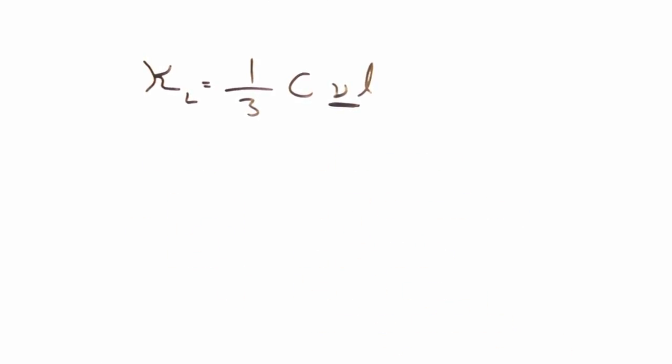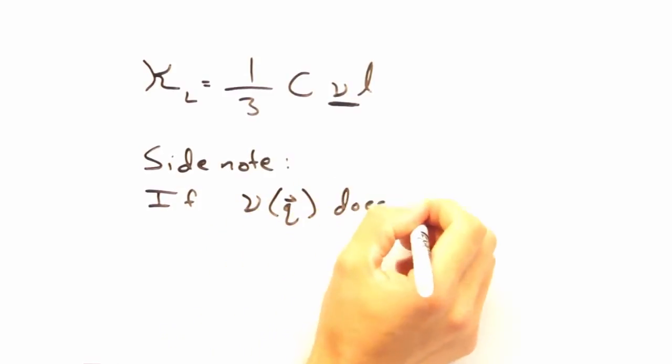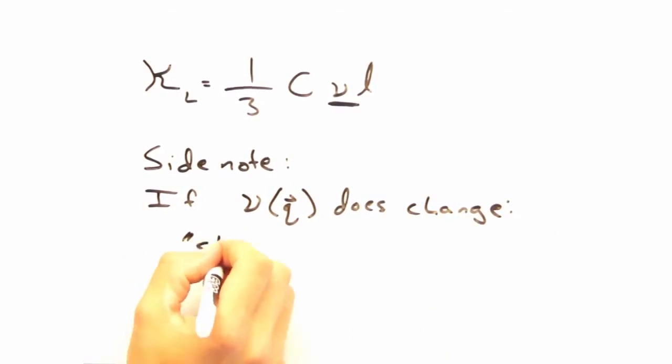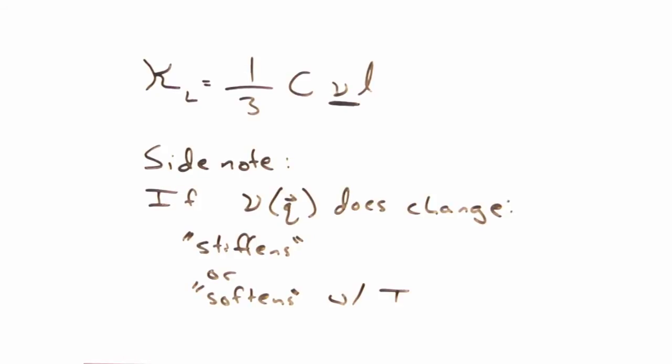Yeah, this is a really good assumption. When the group velocity does change significantly with temperature, it's actually so unusual that we have special terms. We say that the lattice is either stiffening or softening with temperature. Today, though, we'll assume it's a nice, boring lattice where the group velocity is temperature independent.